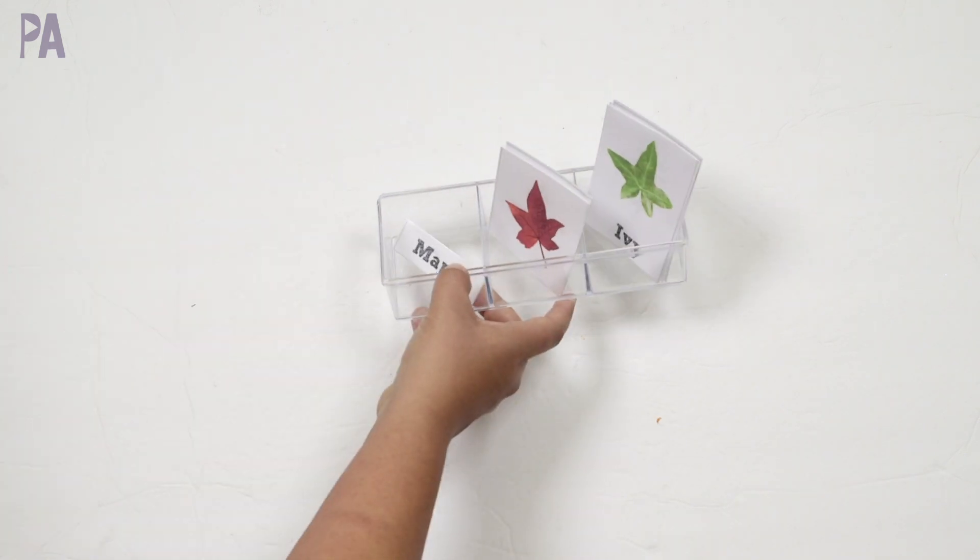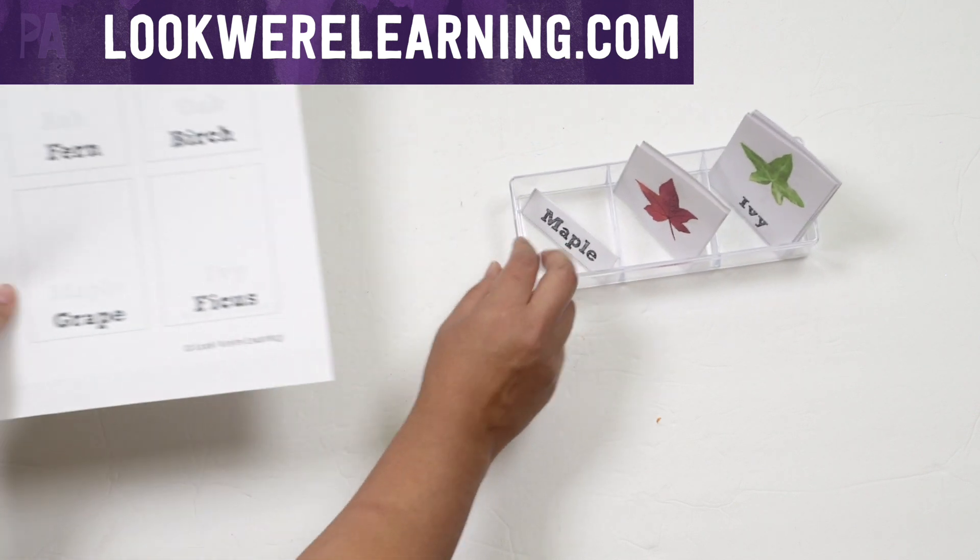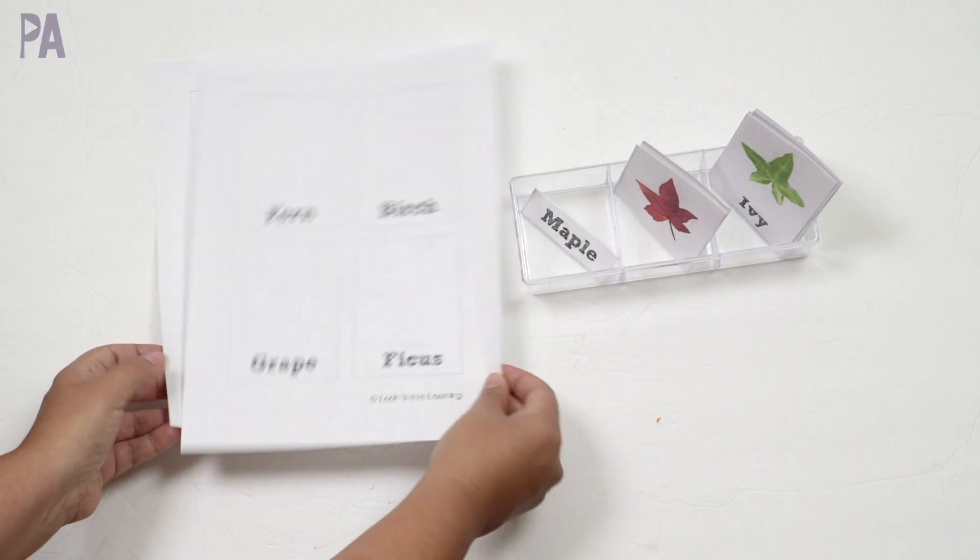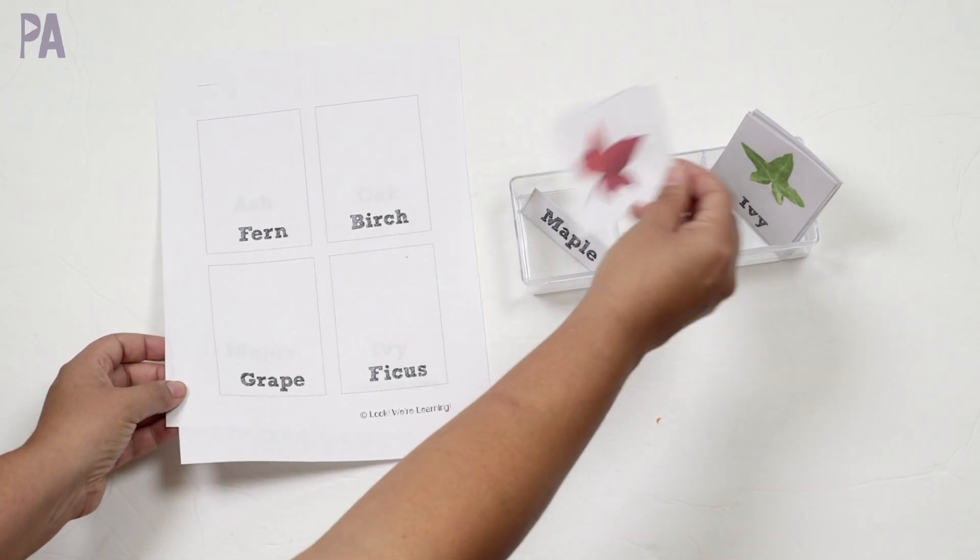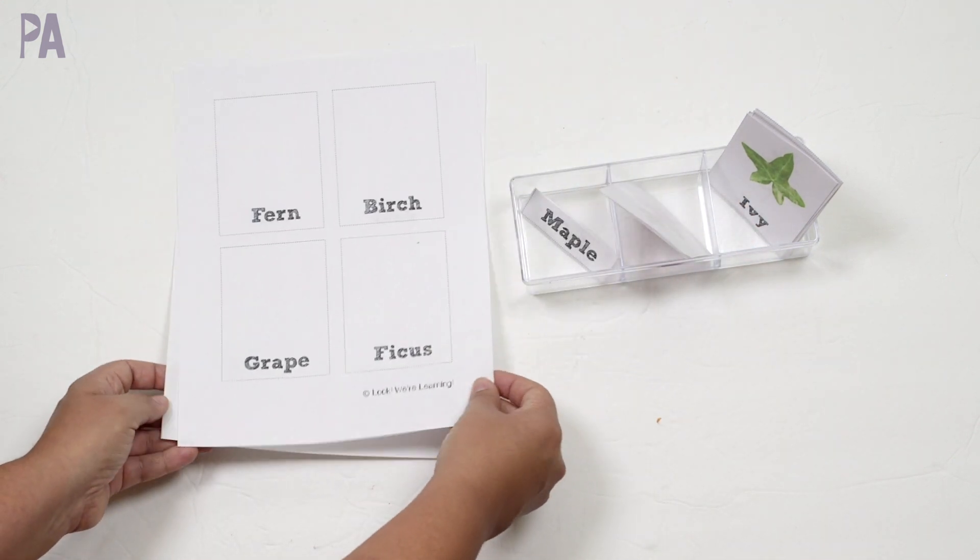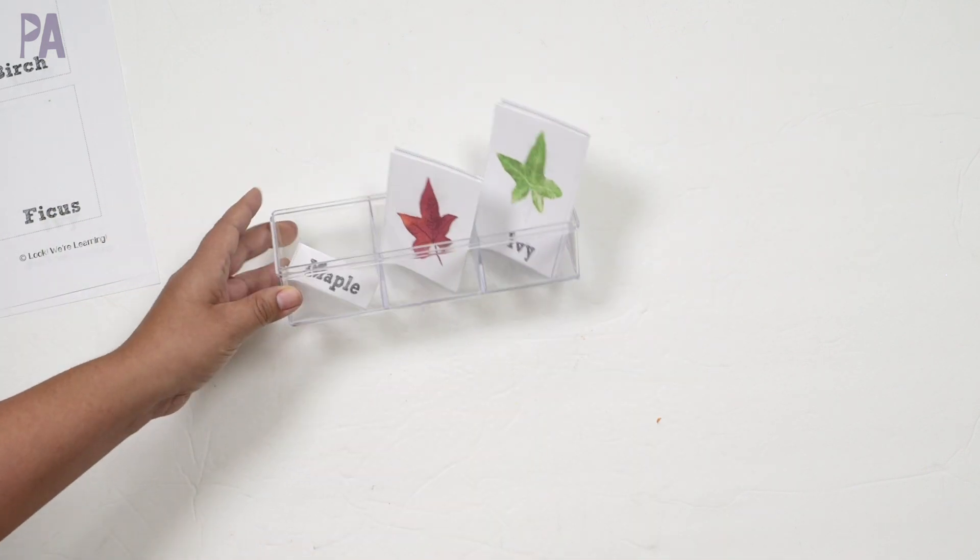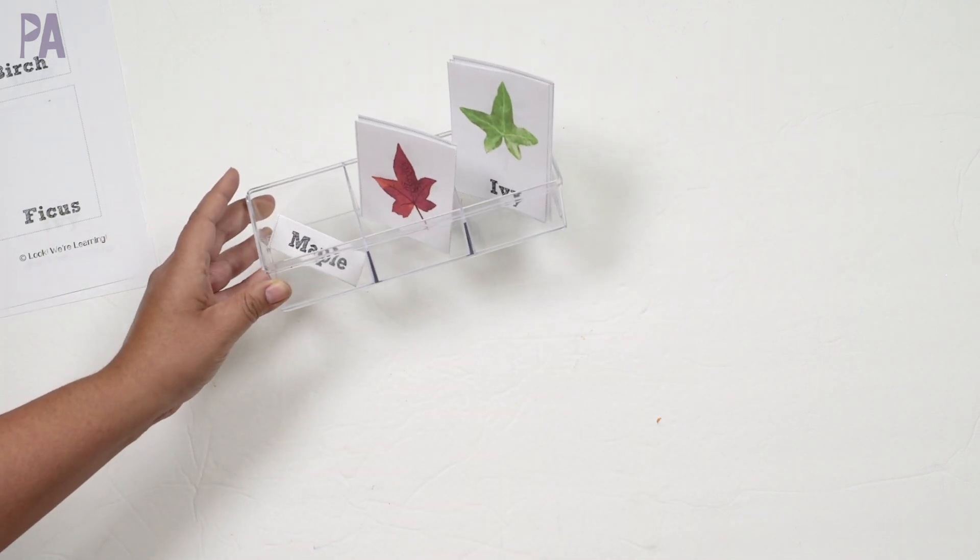I adore this free printable. This one is all about categorizing leaves. So it comes printed out like this and then they also have the ones with the leaves on them in color. I already cut them out. This is what it looks like. And then you cut them all up into cards. I went ahead and organized mine in a little organizer here and it just makes it kind of fun and pretty to do.